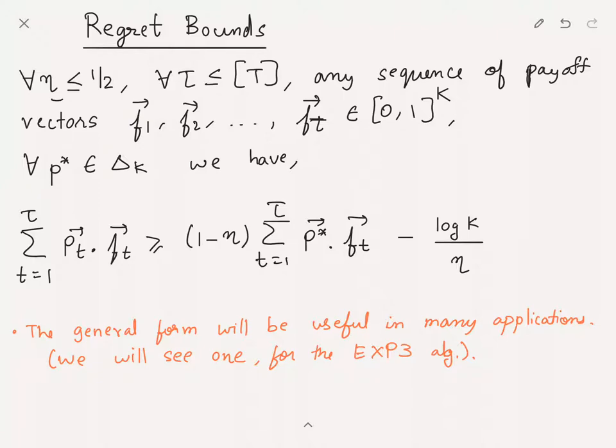Then what we have is that the sum from t=1 to tau of pt (the distribution chosen by the algorithm at time step t) inner product with ft, so this is the sum of the conditional expected rewards, is at least (1 - eta) times sum t=1 to tau of p* inner product with ft minus log(k) / eta.